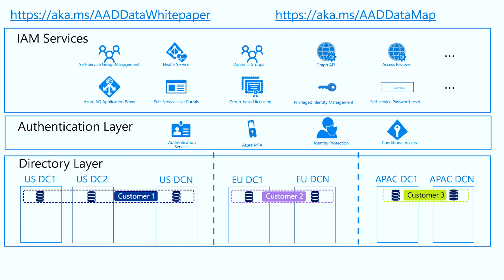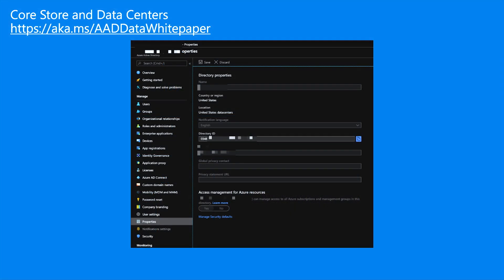How do I know what region my Azure AD core store data is in? A lot of times customers wonder about that. The way you can find out is to go to the Azure Active Directory portal, click on the Properties tab, and then check the location. In this example, the customer picked United States as their address, and as a result their core store is located in United States data centers.